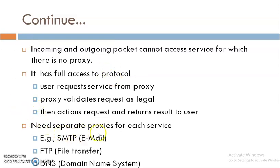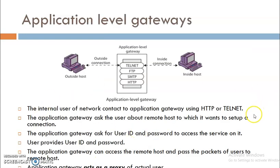For application level gateways, a separate proxy is required for each kind of service. For example, at the application layer, different services are performed: SMTP for email services, FTP for file transfer services, DNS for domain name system services, and Telnet for remote login. This figure represents how the application level gateway is involved and how it acts as a proxy.